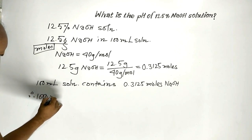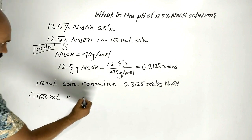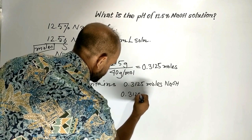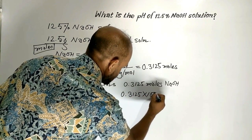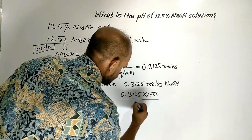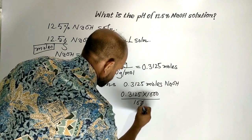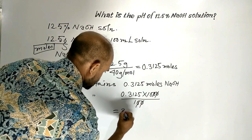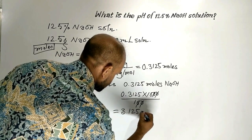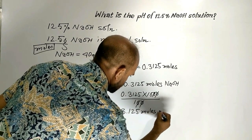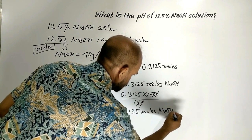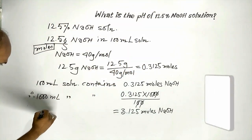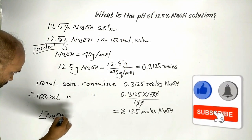1000 milliliter solution contains 0.3125 times 1000 divided by 100, which equals 3.125 moles of sodium hydroxide per liter. That is a concentration of 3.125 molar.